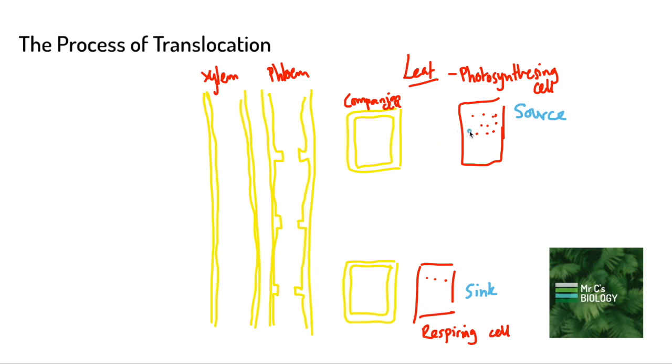The first thing that's going to happen is we've made this sucrose and it's going to diffuse into our companion cells. That happens down the diffusion gradient. We've got lots of sucrose being made here and no sucrose here, so it's going from a high concentration to a low concentration.